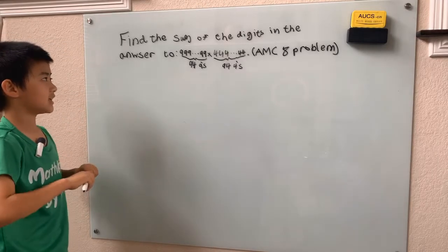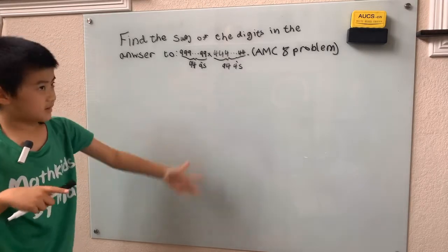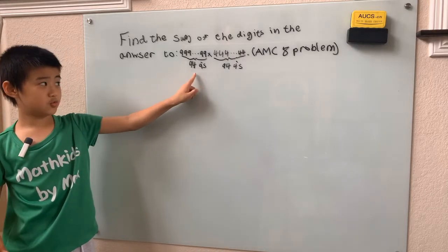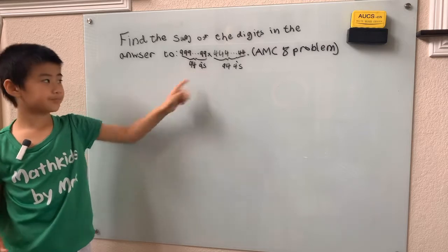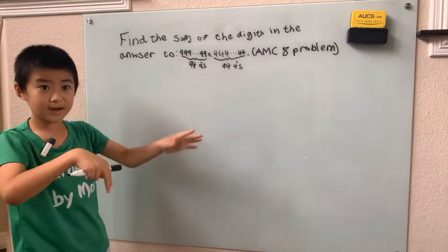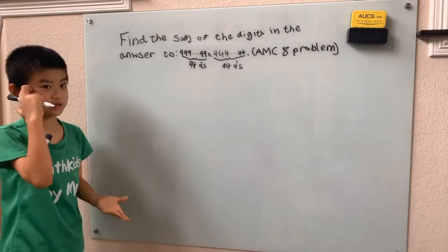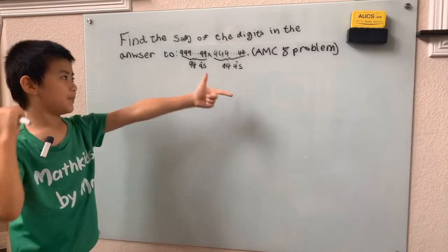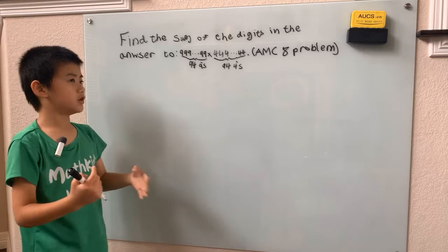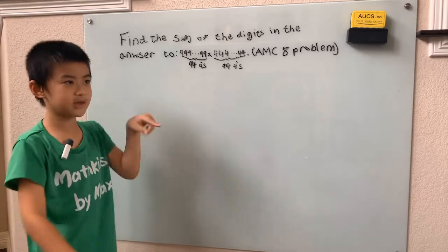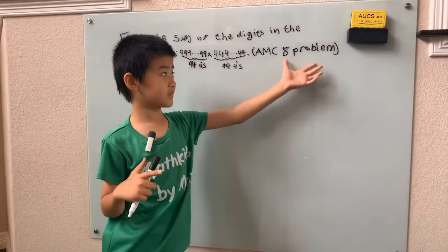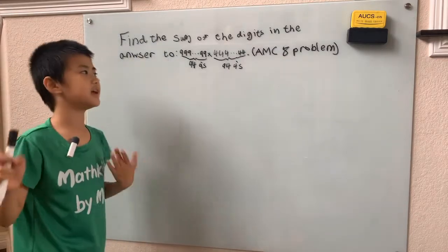Find the sum of the digits of 99999999 — 94 nines — multiplied by 44444444 — 94 fours. We just keep writing nines until we get to the 94th nine, and the same number with all 94 digits being four. This is an AMC8 problem, so don't be scared by the big numbers.